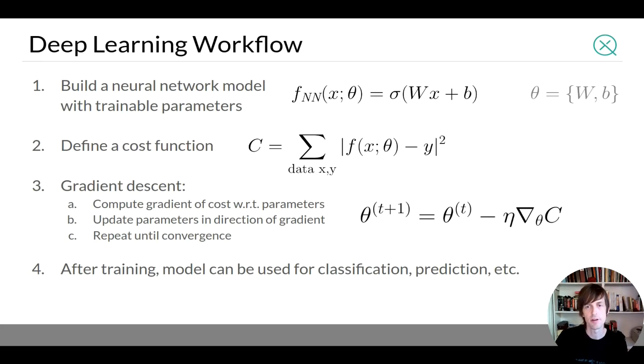And then to train it you use a trick from first year calculus which is gradient descent. So the idea here is you compute the gradient of that cost function with respect to each parameter. So the gradient is a vector of partial derivatives and it points in the direction of steepest descent in parameter space. So what you can do is you can iteratively update your parameters by moving them along that gradient and eventually you should converge to a minimum. And then after you found a suitable minimum your model can be used for classification or prediction or whatever it's designed to be used for.